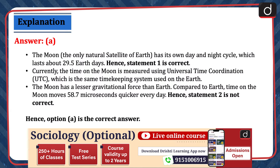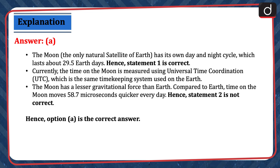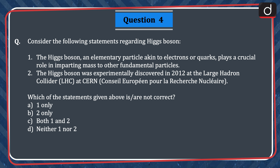The Moon has its own day and night cycle which lasts about 29.5 Earth days — hence statement one is correct. Currently, the time on the Moon is measured using Universal Time Coordination, the same timekeeping system used on Earth. The Moon has a lesser gravitational force than Earth; compared to Earth, time on the Moon moves 58.7 microseconds quicker every day. Hence statement two is not correct, and option A is the correct answer.